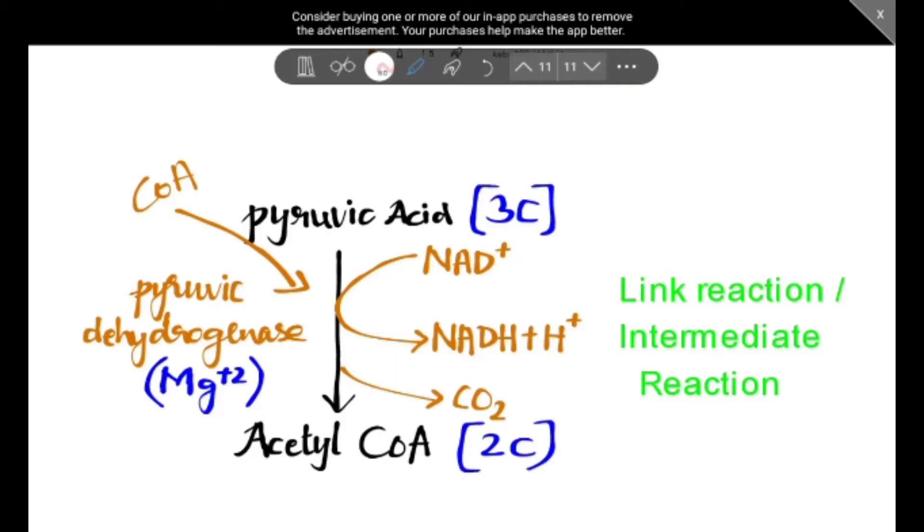First, it is transported to the matrix of the mitochondria where link reaction takes place. Now, coming to the link reaction, it is also called intermediate reaction. Here, pyruvic acid converts to acetyl coenzyme A by using the enzyme pyruvic dehydrogenase.